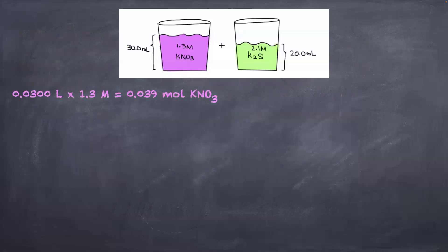So the first step is to find the number of moles of KNO₃ in the first solution. To do that, we multiply the volume by the concentration and this way we find moles of KNO₃. We do the same thing for K₂S — multiply the volume in liters times the concentration to find the moles of K₂S.